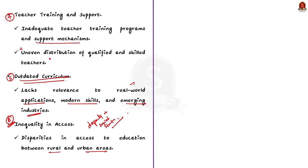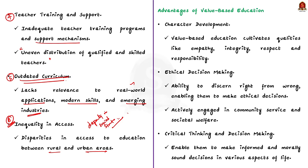Now let us see the advantages of value-based education. Firstly, character development — value-based education cultivates qualities like empathy, integrity, respect, and responsibility, fostering a well-rounded personality among students. Secondly, ethical decision-making — it equips students with the ability to discern right from wrong, enabling them to make ethical decisions in various aspects of life. Students exposed to value-based education tend to be more socially conscious and actively engage in community service and societal welfare.